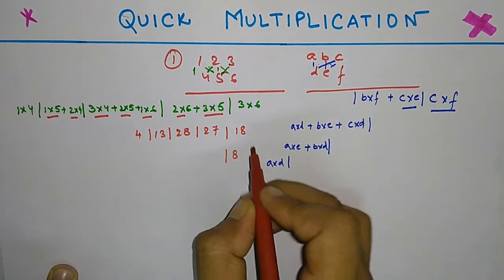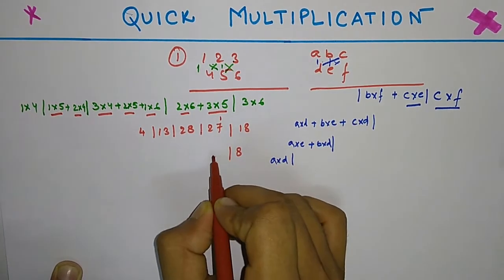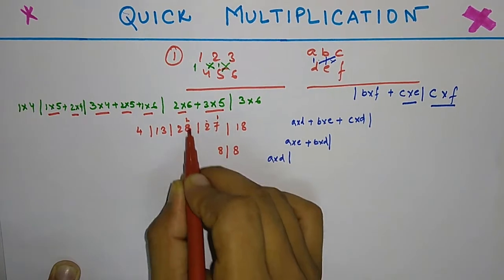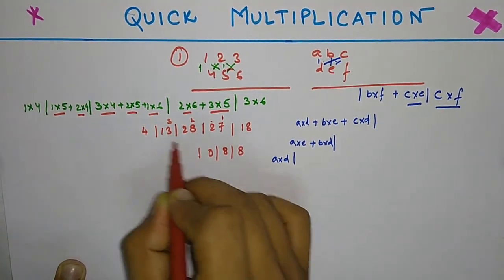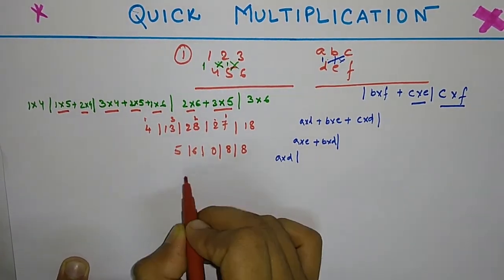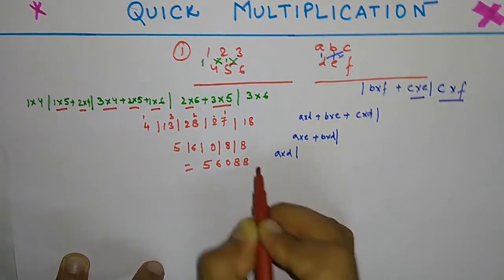Then giving carry overs: 8 will be over here and 1 will be carried over, so it will be 28. 8, 2 will be carried over, it will be 30. 0, 3 will be carried over, it will be 13. 3, 16, 6, 1, it will be 5.